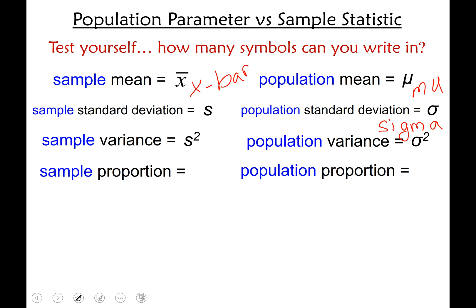Sample proportion we haven't talked about as much and that's this symbol here which is P hat. And finally the population proportion is P without the hat on top.